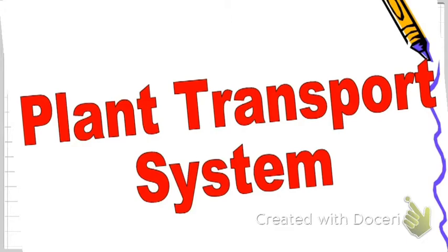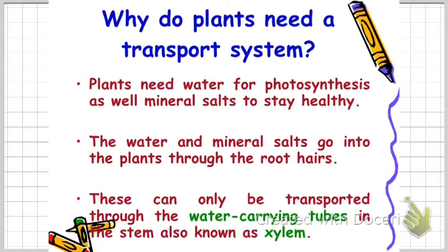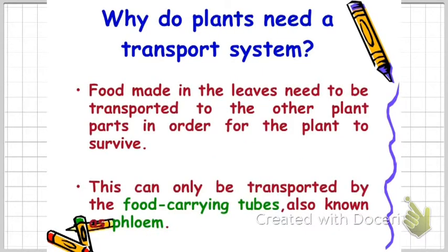The two special tubes are the water-carrying tubes and the food-carrying tubes. Now, why do plants need a transport system? Plants need water for photosynthesis and mineral salts to stay healthy. The water and mineral salts need to go to all parts of the plant, and this can only be done with the water-carrying tubes — transporting water and mineral salt from the roots to all parts of the plant.